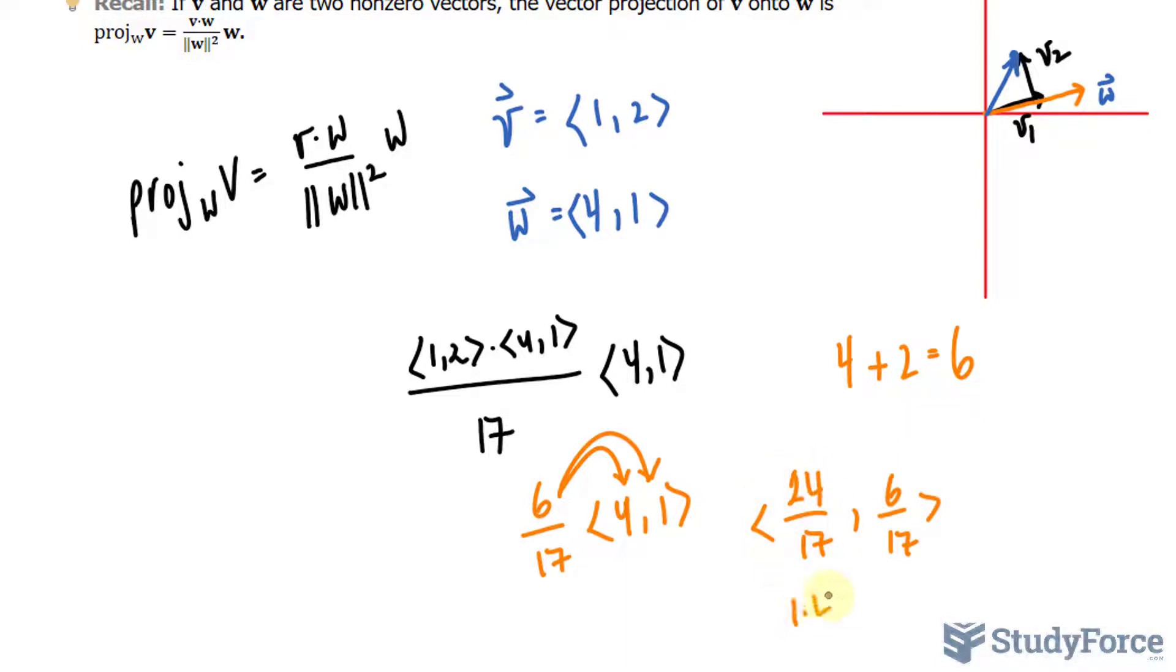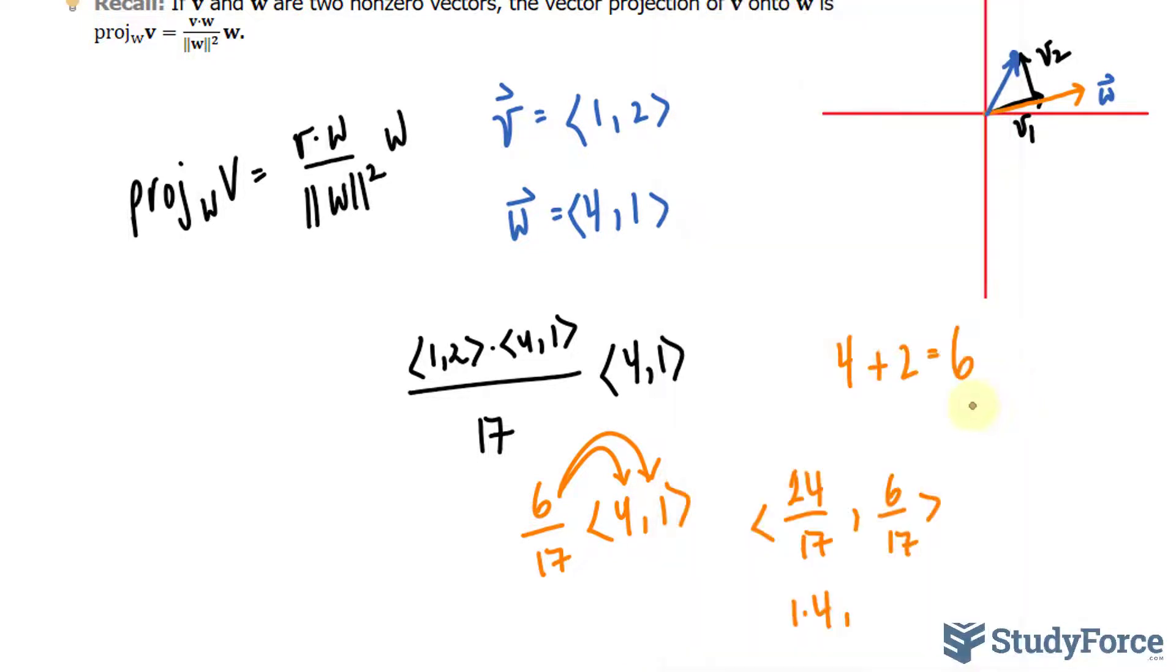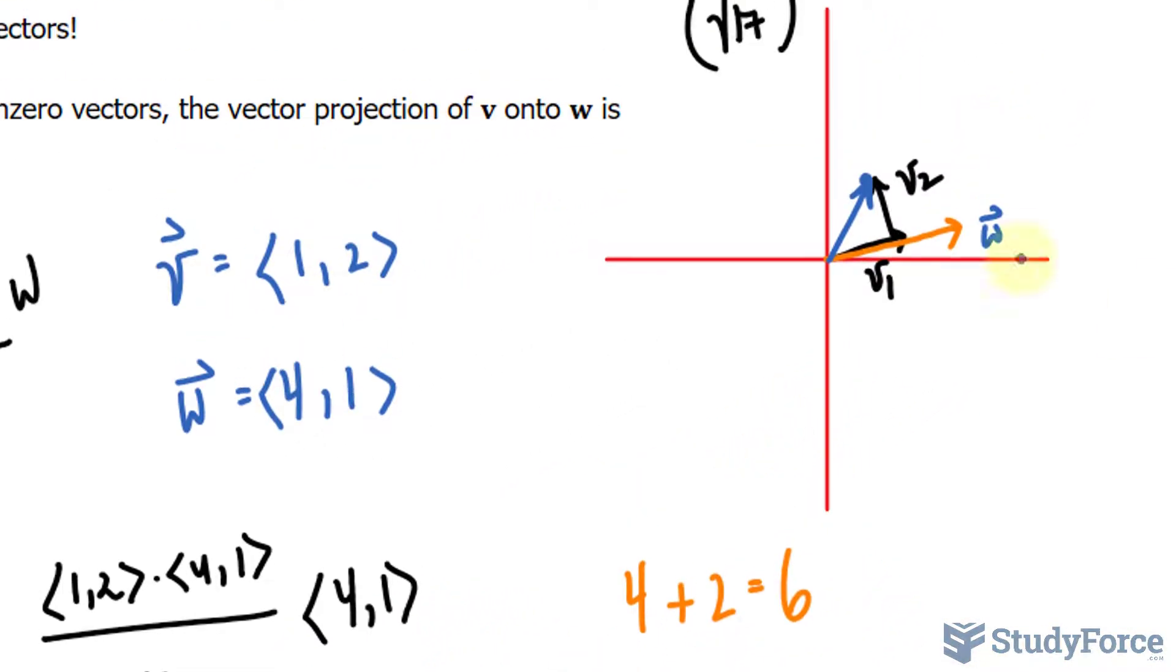That is approximately equal to 1.4, and 6/17 is approximately 0.35. So these are the coordinates of the point V₁. This is not to scale, but if we were to scale, you could see that it actually will lie on W.